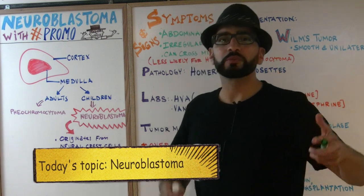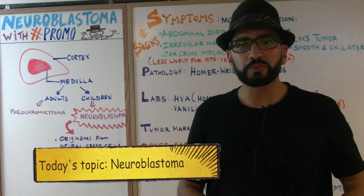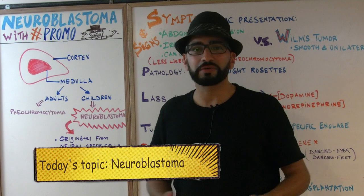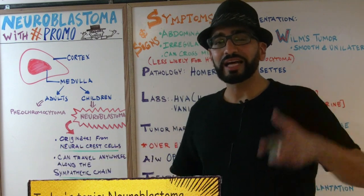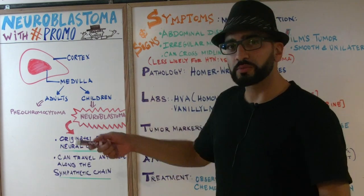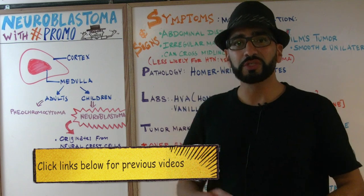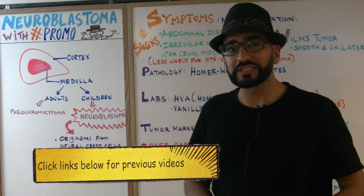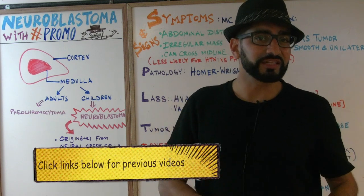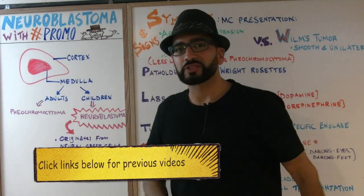Neuroblastoma is the most common adrenal tumor seen in children — children less than approximately four years old. Last week we talked about pheochromocytoma, which was the most common adrenal medulla tumor seen in adults. If you missed that lecture, click on the links below and it'll take you back to it.